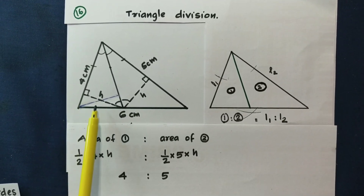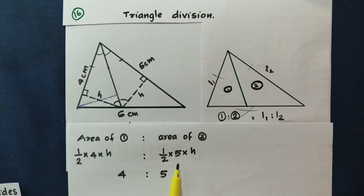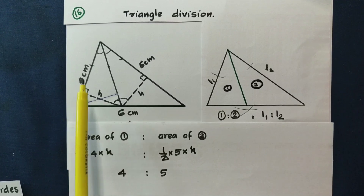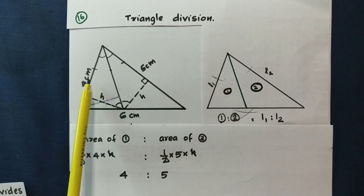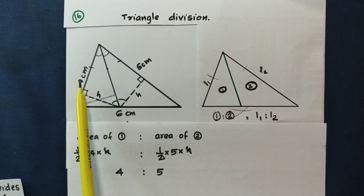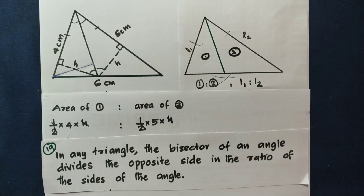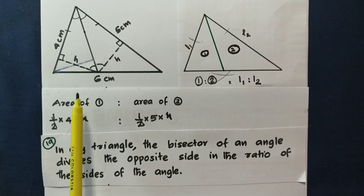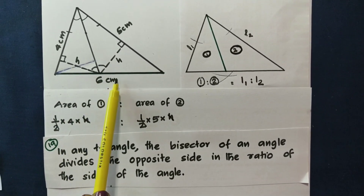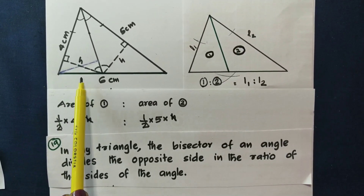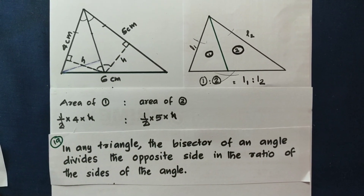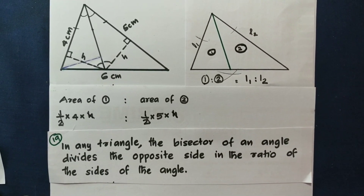The area ratio of the two triangles is: half into 4 into H, divided by half into 5 into H. If we cancel, we get 4 is to 5. What is this? It is the side length from the vertex. The ratio of these triangles is equal to the ratio of the lengths of the two sides. This triangle's bisector divides the opposite side in that same ratio.